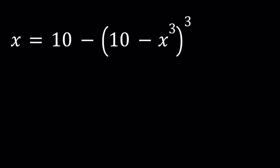We have x equals 10 minus the quantity 10 minus x cubed to the third power, and we're going to be solving for x values. I'll be presenting two methods, even though the first method will not be complete, and you'll see why in a little bit.